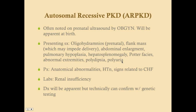Polydipsia and polyuria are due to renal failure causing concentration problems. Potter facies and abnormal extremities are secondary to oligohydramnios — the baby doesn't have fluid cushioning, disrupting intrauterine growth. Hepatosplenomegaly is due to hepatic abnormalities that accompany autosomal recessive polycystic kidney disease.